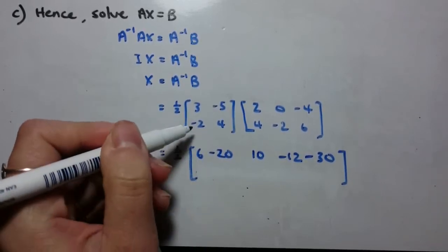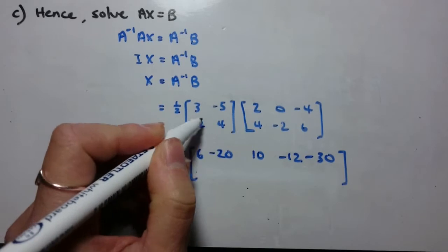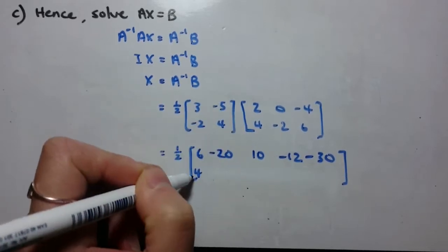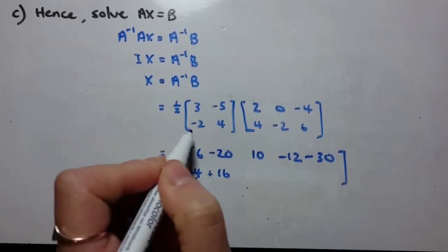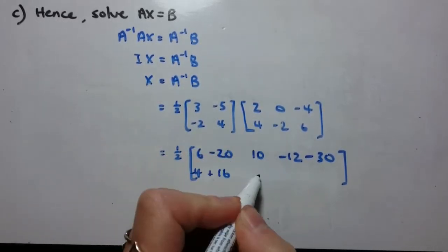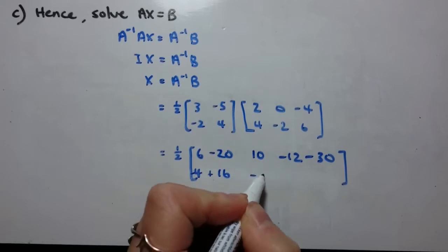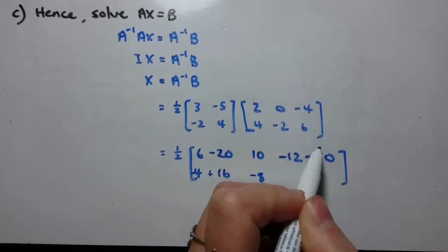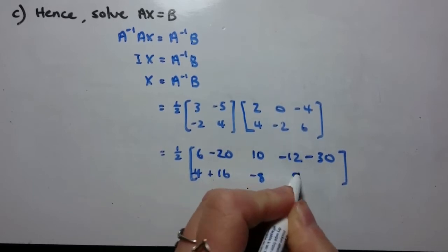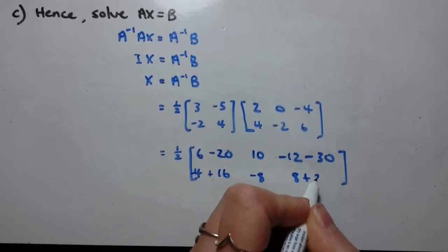For this second row, it is second row first column, negative 2 times negative 2 is 4, negative 4 sorry, 4 times 4 is 16. Second row second column, negative 2 and 0 is 0, 4 times negative 2 is negative 8. Last one, second row third column, negative 2 times negative 4 is 8, 4 times 6 is 24.